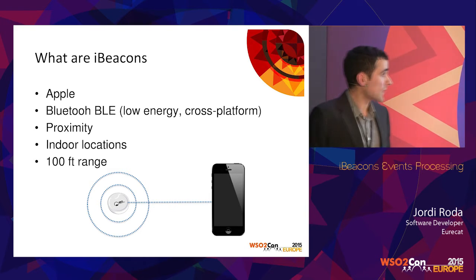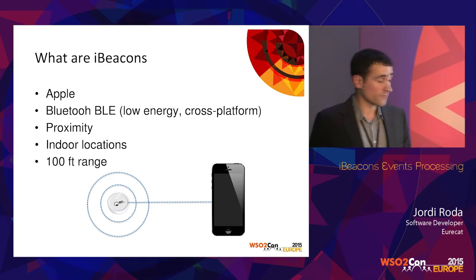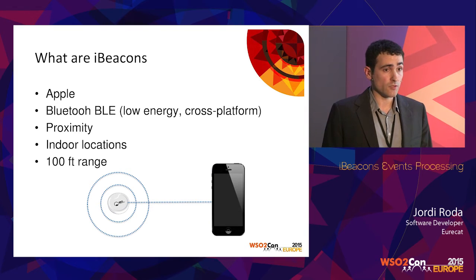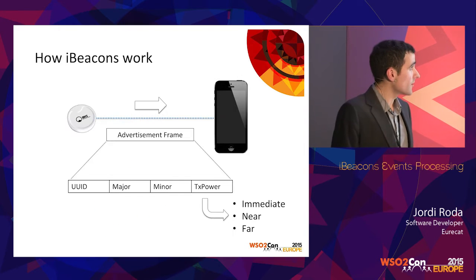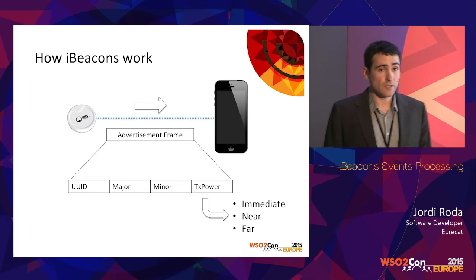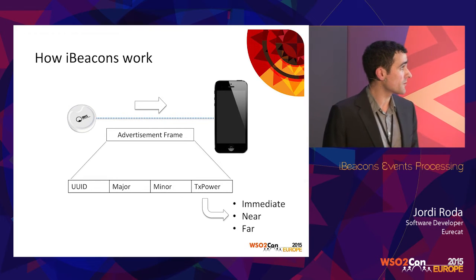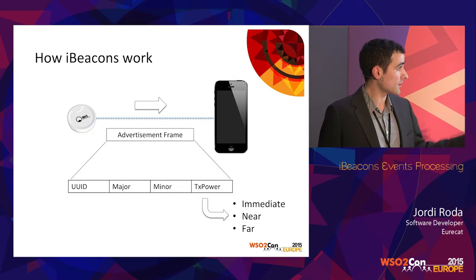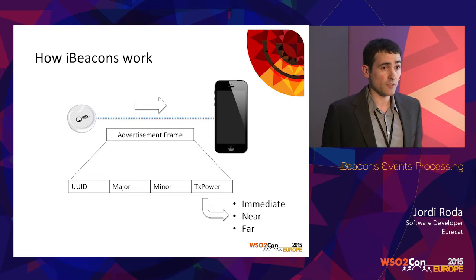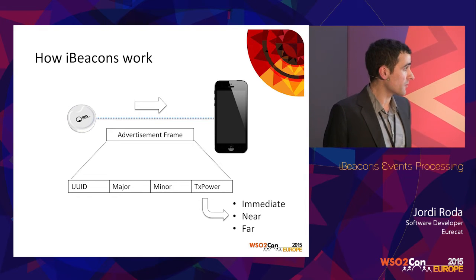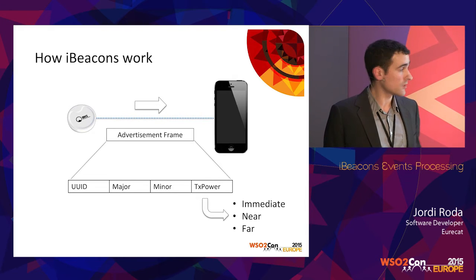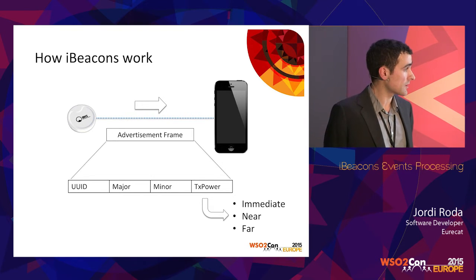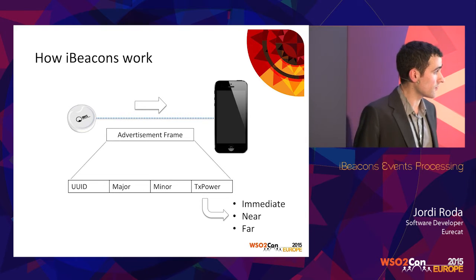Their applications go from home automation services to improving the retail shop experience. They work by continuously sending an advertisement frame that contains a UID, major, and minor field that identifies the iBeacon, and a transmission power that lets you know your proximity, which can be classified as near, far, and immediate.